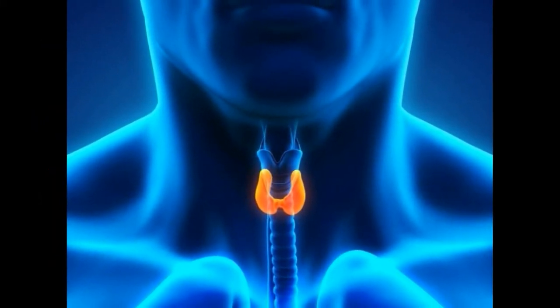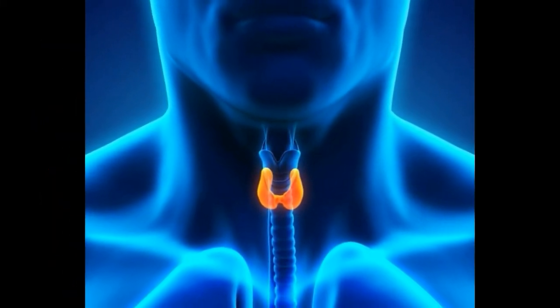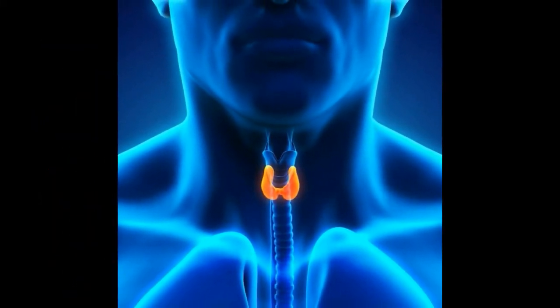What is a hypoechoic mass? A hypoechoic mass is a lump which appears relatively darker on an ultrasound scan, because it reflects fewer ultrasound waves. The significance of this finding varies depending on the context.